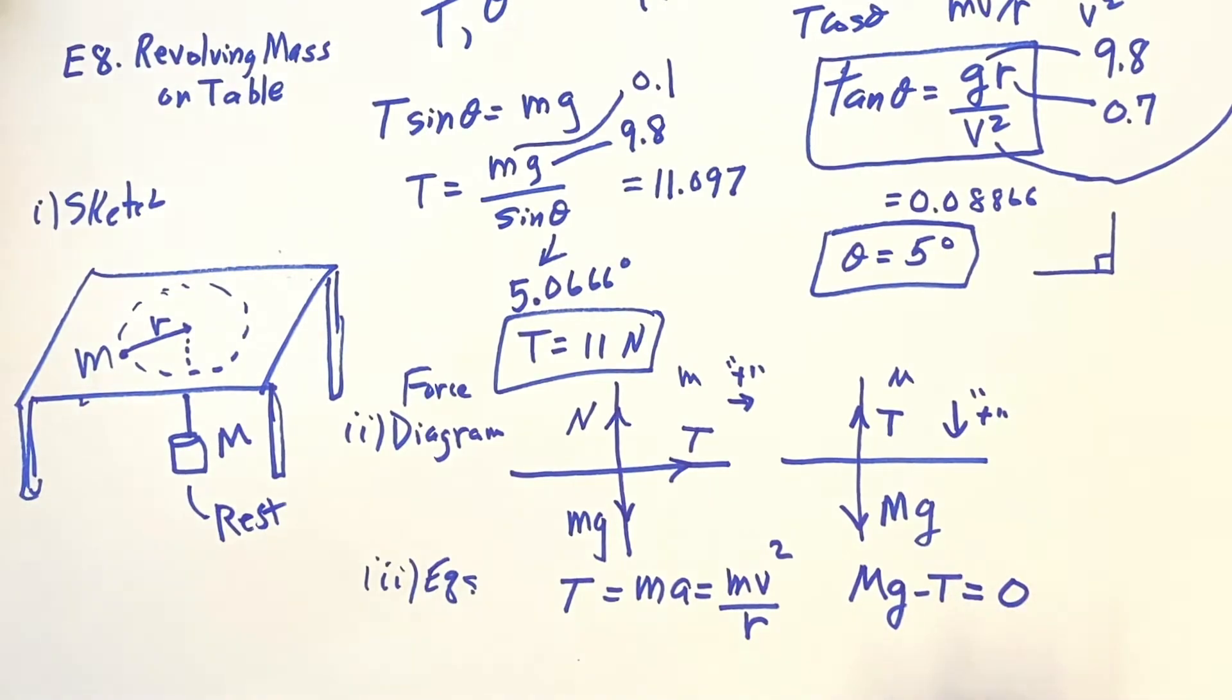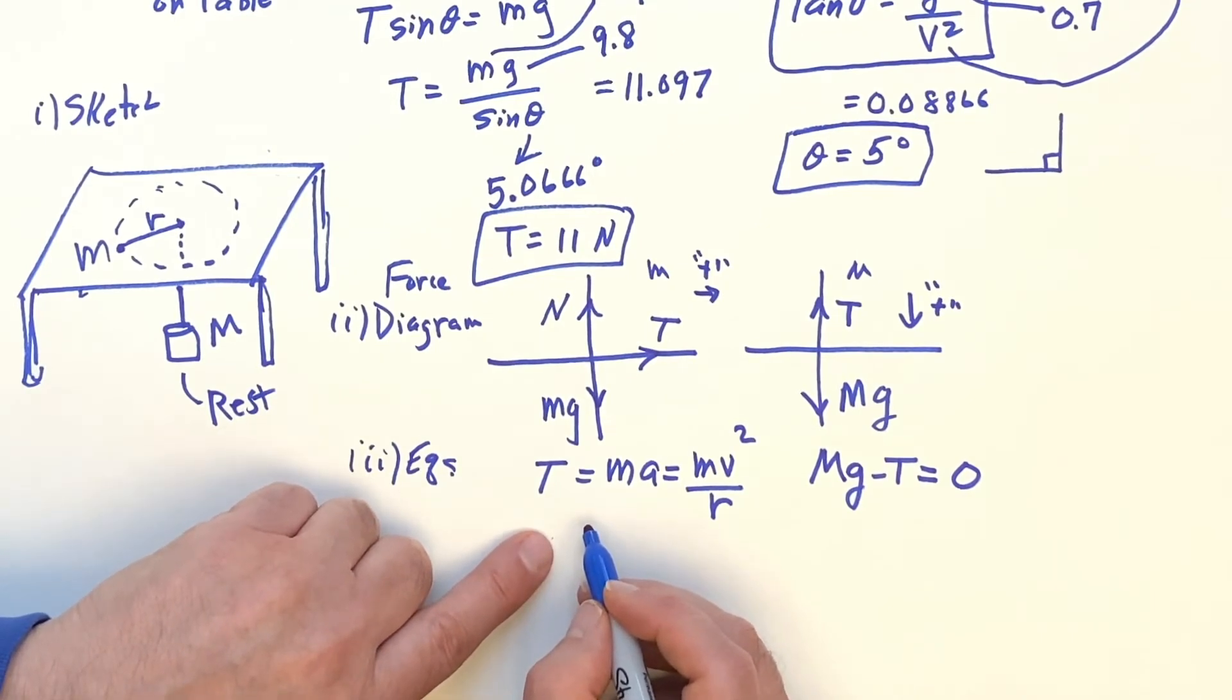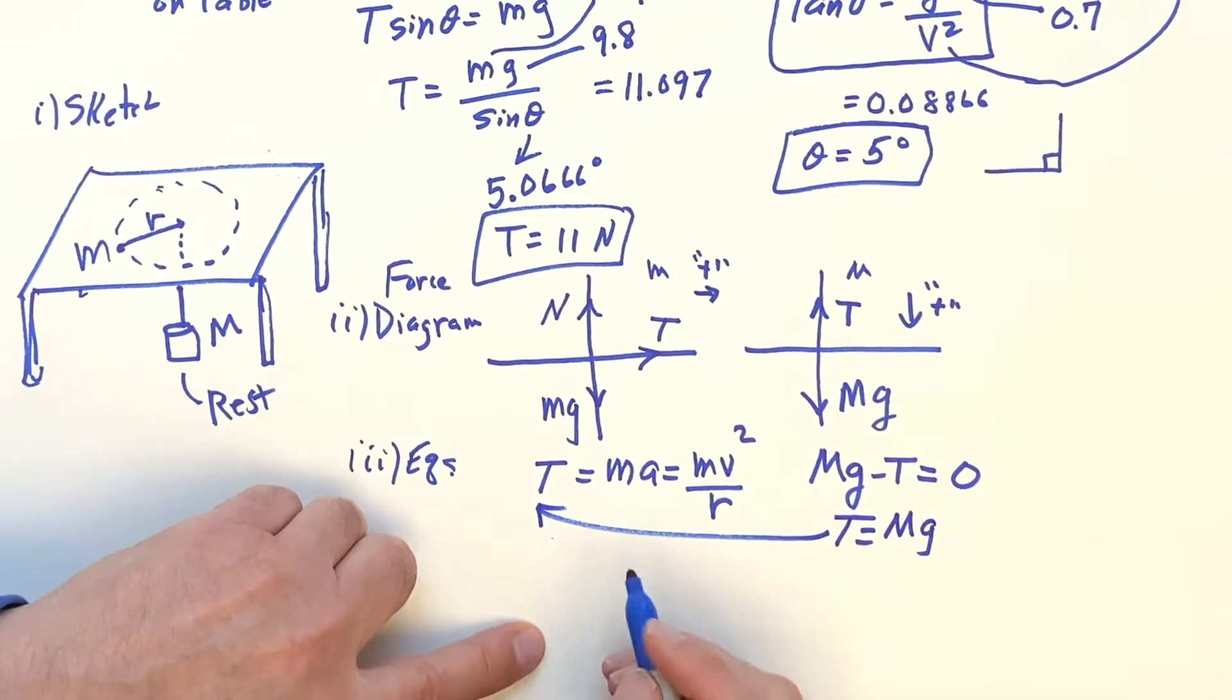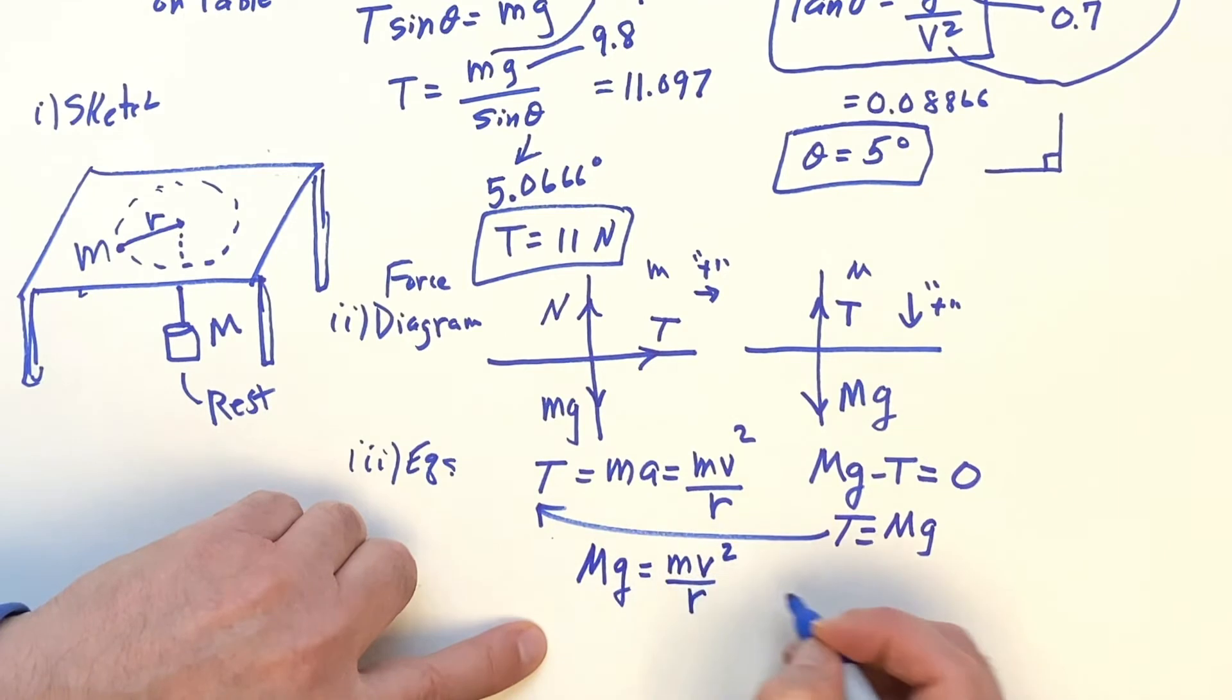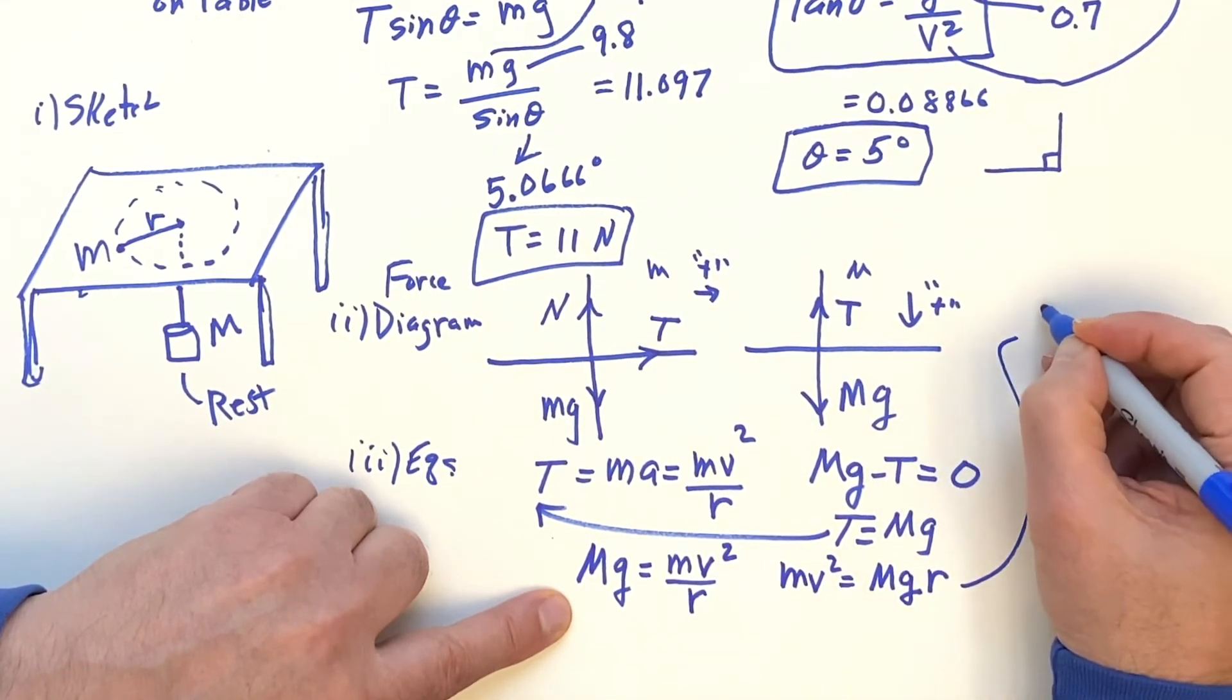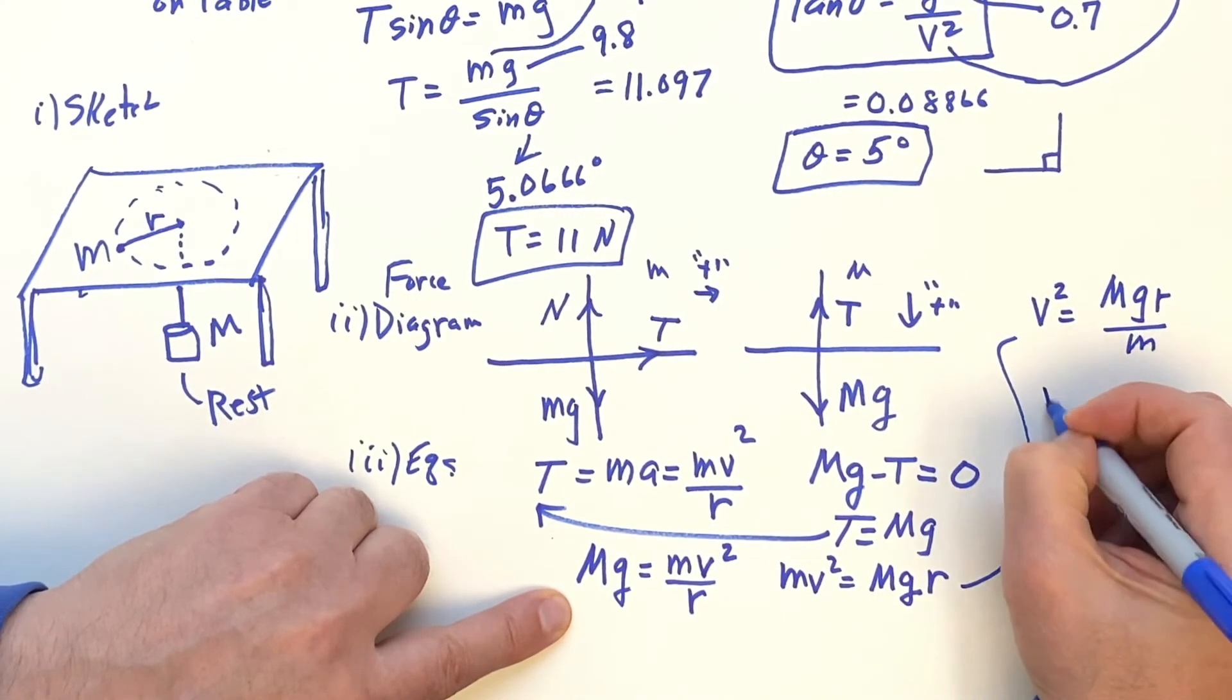But now we're ready to go, because now we can add these equations together. Or in this case, it's just a straightforward substitution. It might be simpler just to do T equals Mg, put it over there. And then we have Mg equals mv² over r. And remember, we're solving for v. That was the question. So that means mv² equals Mgr. And then we divide by the little m. And then we take the square root.